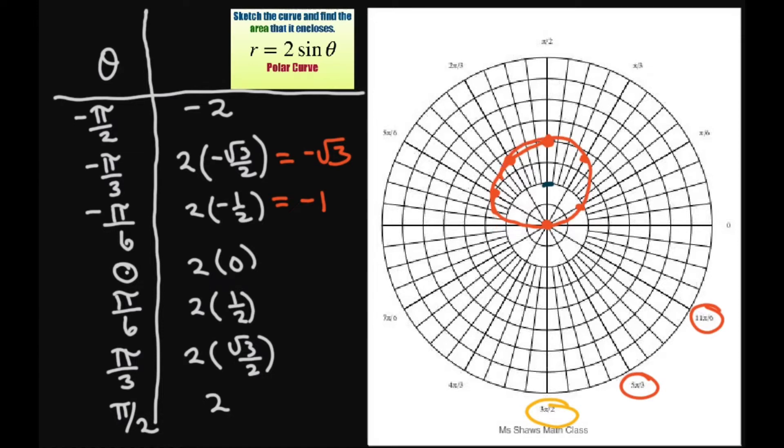So basically, they just want you to sketch the circle. It doesn't have to be perfect. And the area that it encloses is this area here. And therefore, we're going from 0 to pi. Alright, so let's go ahead and do that.